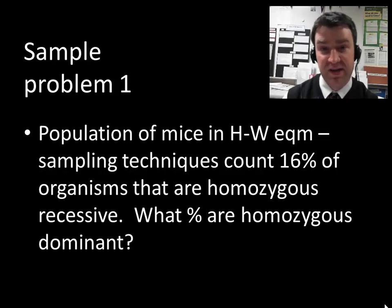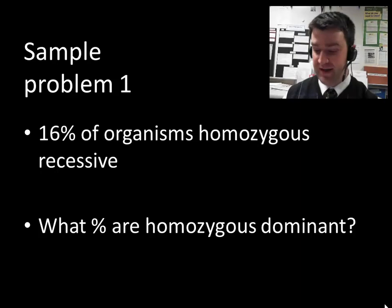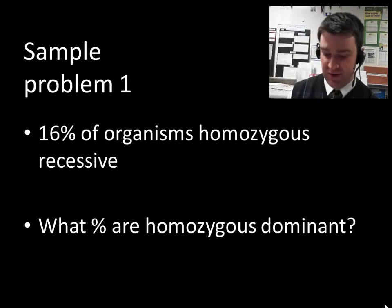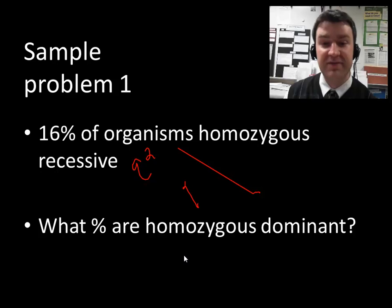Let's say we have a population of mice that are in Hardy-Weinberg equilibrium. Let's say that we're able to count that about 16% of organisms in the population are indeed homozygous recessive, because they show the recessive phenotype. So what if we wanted to know what percent of them are homozygous dominant in genotype? So let's break up this word problem. What are we given in this equation? We're given that 16% of the organisms are homozygous recessive. Remember, that really refers to the term q squared.